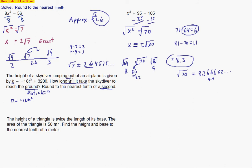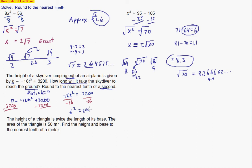That's time. And this is plus 3,200 — so 3,200 feet is where the skydiver started, descending down to the ground. First, isolate the t squared. We've got negative 16t squared equals negative 3,200. Dividing by negative 16 on both sides cancels out the negatives and gives me t squared equals 200. From that point, take the square root of both sides, and I'm left with t equals plus or minus the square root of 200.